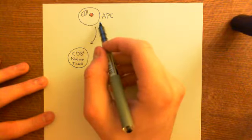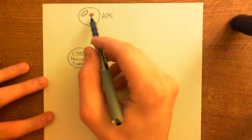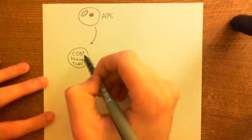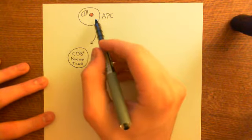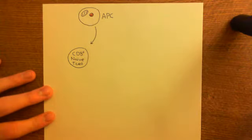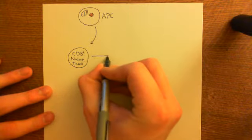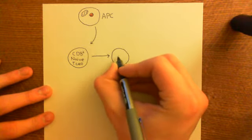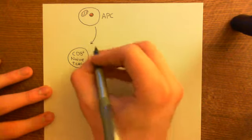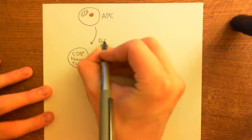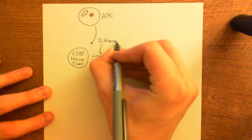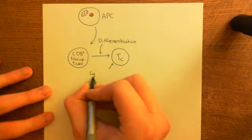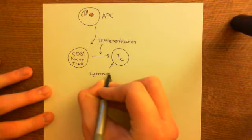What will have to happen is the antigen-presenting cell, which has a fragment of an antigen from the pathogen mounted on its surface, will have to look long and hard for a CD8-positive naive T cell which is perfectly matched for this antigen fragment. When it finds it, this CD8-positive naive T cell will become activated and differentiate into what's known as a cytotoxic T cell. Differentiation means specializing in which cell type you are, and it's now called a cytotoxic T cell, denoted TC — T for T cell, and the little c to denote cytotoxic.